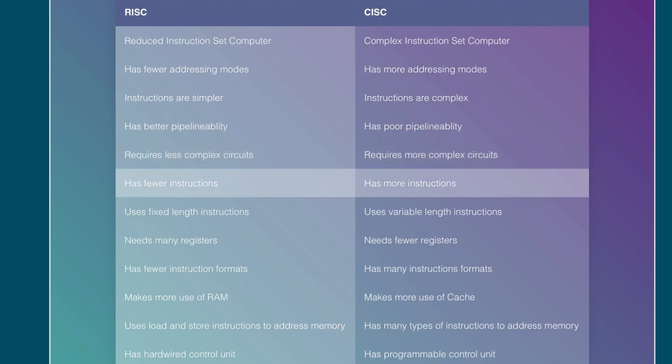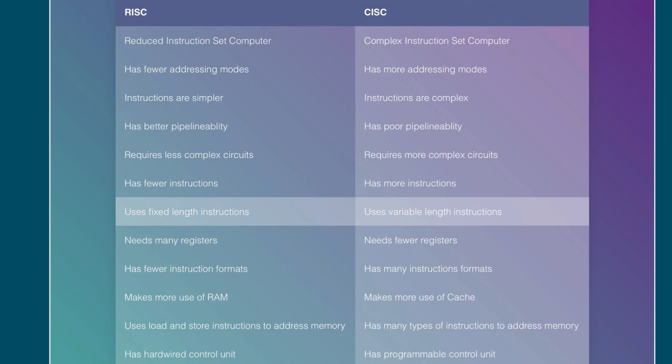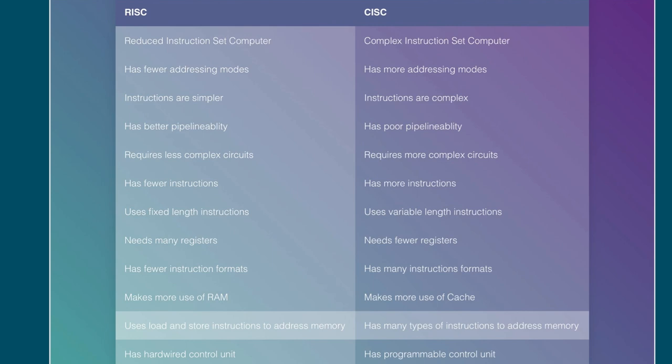RISC has fewer instructions. Complex instruction set, which means CISC has more instructions. RISC uses fixed length instructions, and CISC uses variable length instructions. RISC needs many registers, while CISC only needs a few. RISC has fewer instruction formats, CISC has many of them. RISC uses more RAM, while CISC uses more cache. RISC uses load and store instructions to address memory, while CISC has many types of instructions to address memory. RISC has a hardwired control unit, while CISC has a programmable control unit.